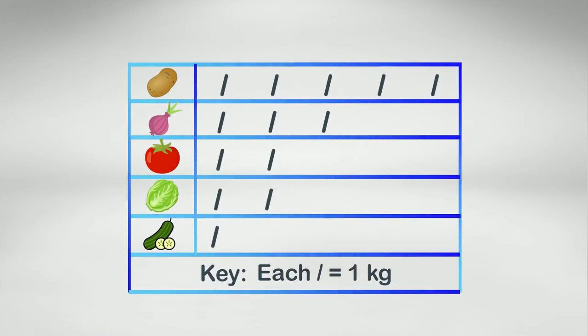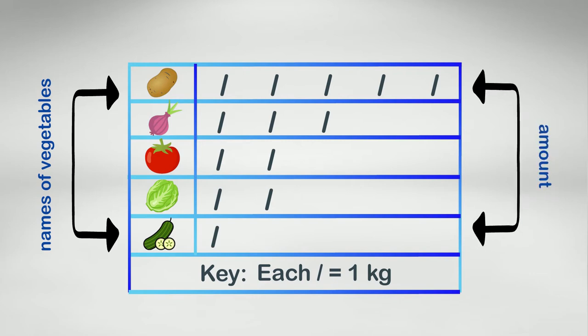From the first row of the chart, we know that this graph shows the amount of different vegetables that Hajra bought from the market. The left column shows the names of vegetables. The amount is represented in the form of the symbol slash, as shown in the right column. From the key at the bottom of the graph, we know that each slash accounts for one kilogram.